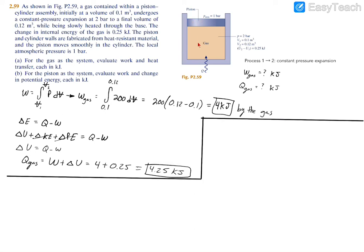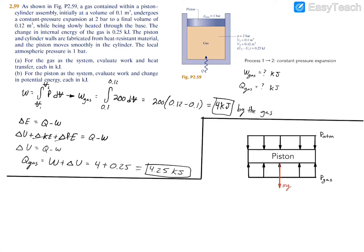We draw a free body diagram of the piston and the forces acting on it. On top we have atmospheric pressure acting across the entire area of the piston, and underneath we have the gas pressure pushing the piston upwards across the same area. Lastly, there is the weight of the piston pulling it back down. We need the resultant force for the formula work equals force times displacement, using the change in volume to find the distance the piston ascends.